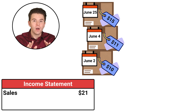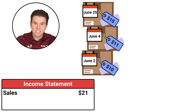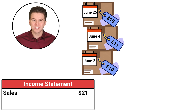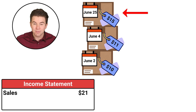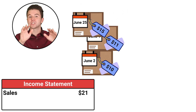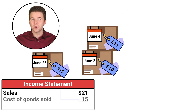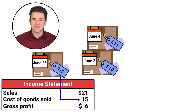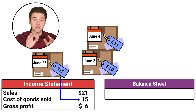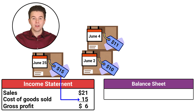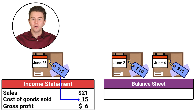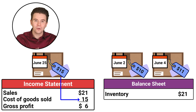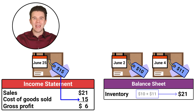Using LIFO, the last or most recent unit purchased, which was on June 25th for $15, is reported as cost of goods sold on the income statement. The other two remaining units, for $10 and $11, get reported in inventory on the balance sheet.